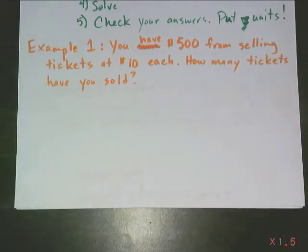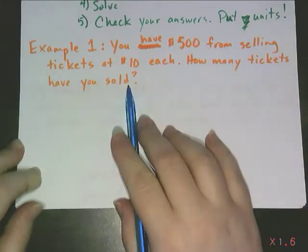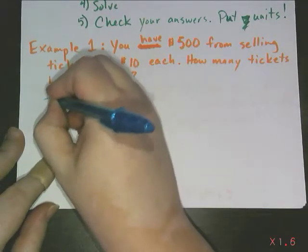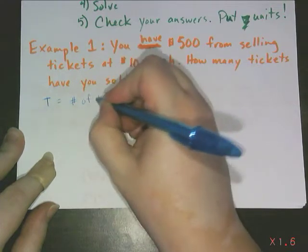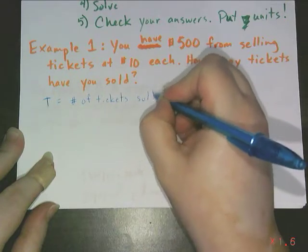For example, let's say you have $500 from selling tickets that are $10 each. How many tickets have you sold? Well, let's start by defining our variable. I want to know how many tickets have I sold, so that's what I need to represent with a variable. I'm going to use capital T and I'm going to define that as number of tickets sold. Notice I'm being very specific in my variable definition.